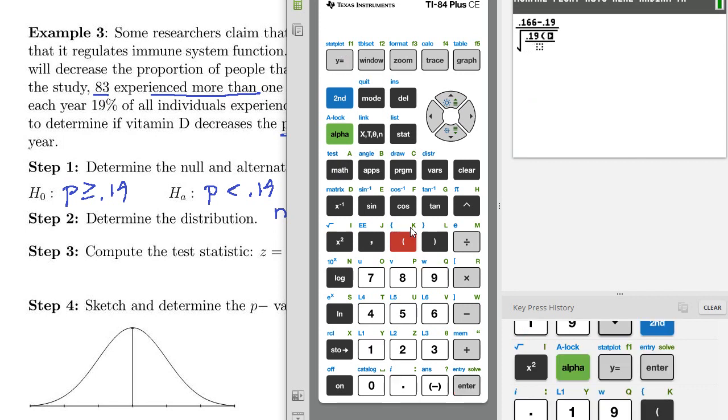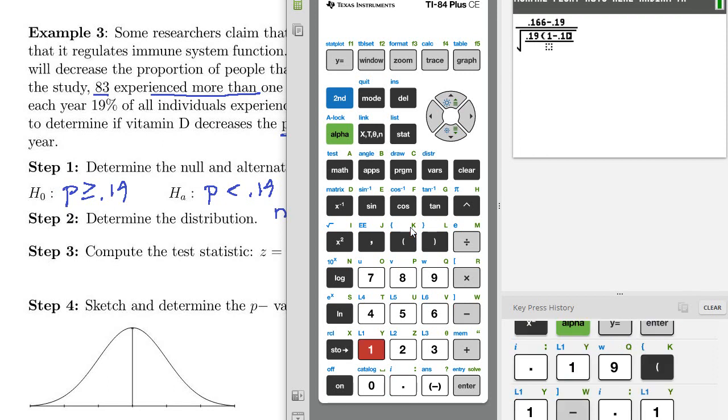And then we got 0.19, and then parentheses, 1 minus 0.19, close it up. And then in the denominator, 500.